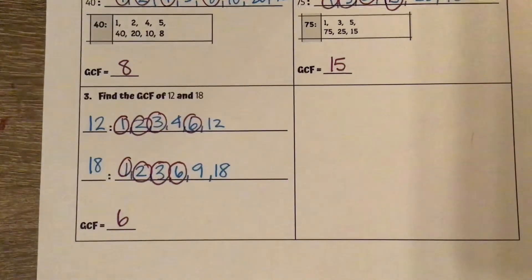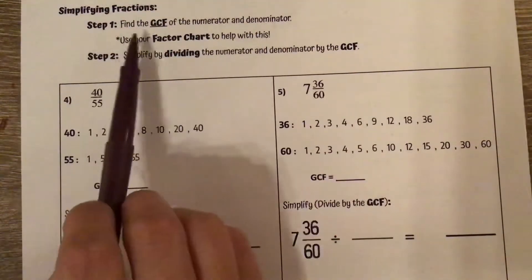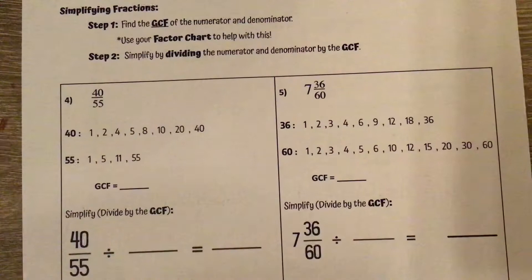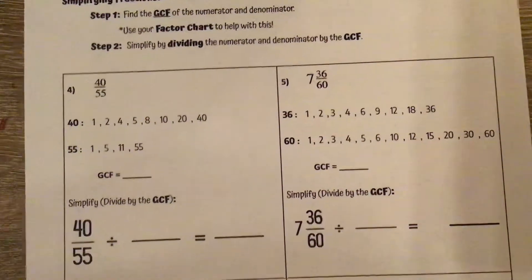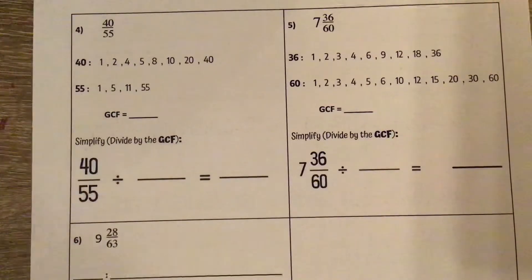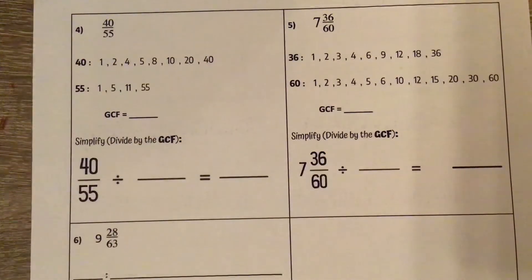So now we're going to use this, finding GCFs, to help us with simplifying fractions. Some quick reminders: we're going to find the GCF using our factor chart, then simplify by dividing the numerator and denominator by that GCF. So kind of like we did on the other page. Started off here, I'm already giving you the factors.